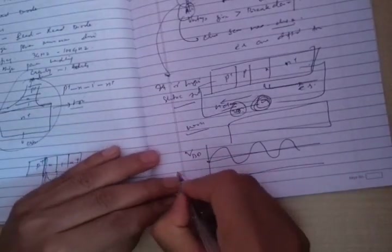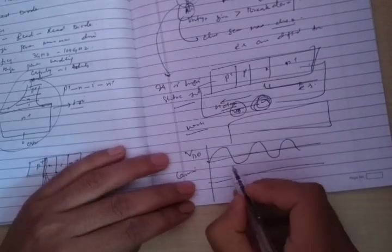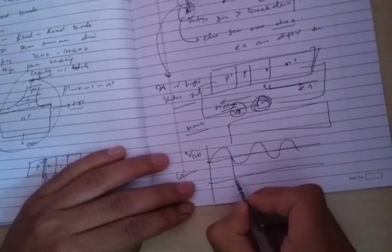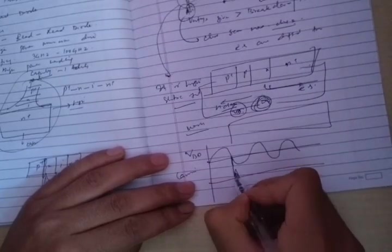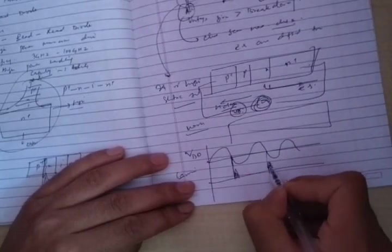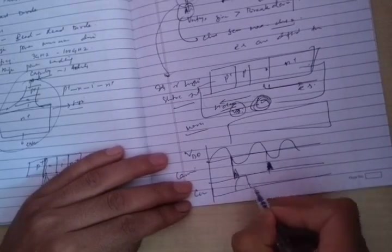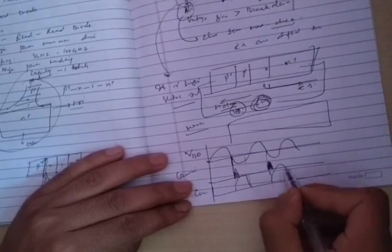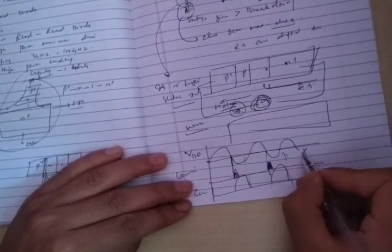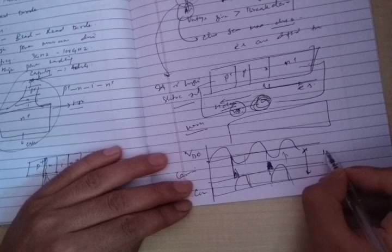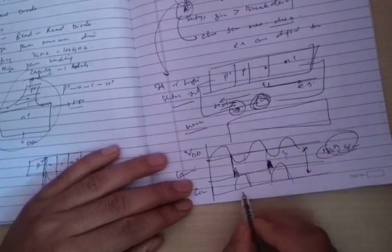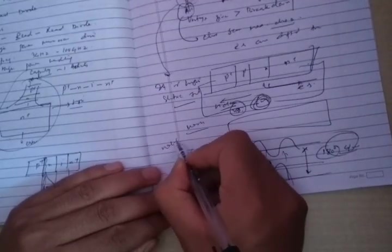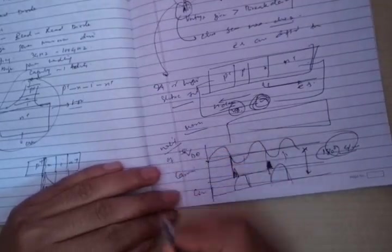Now, carrier concentration will be maximum at the verge of the negative half cycle. The current will be like this and there will be a phase shift of 180 degrees between current and voltage. This is the working of the IMPATT diode. Thank you.